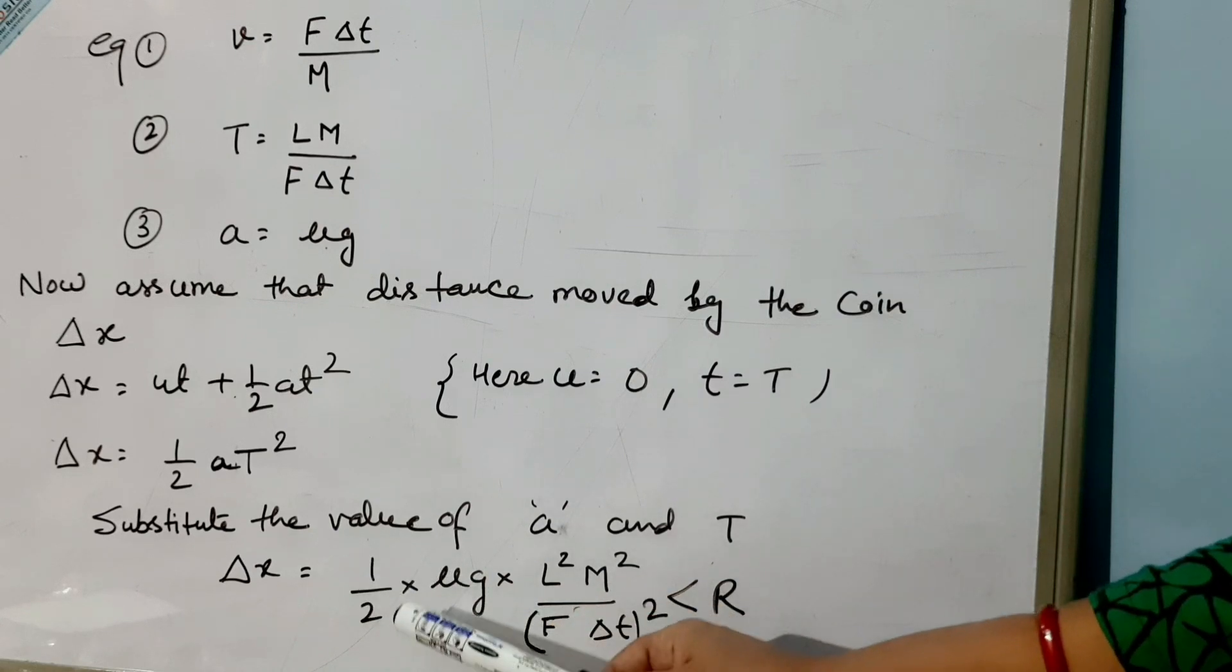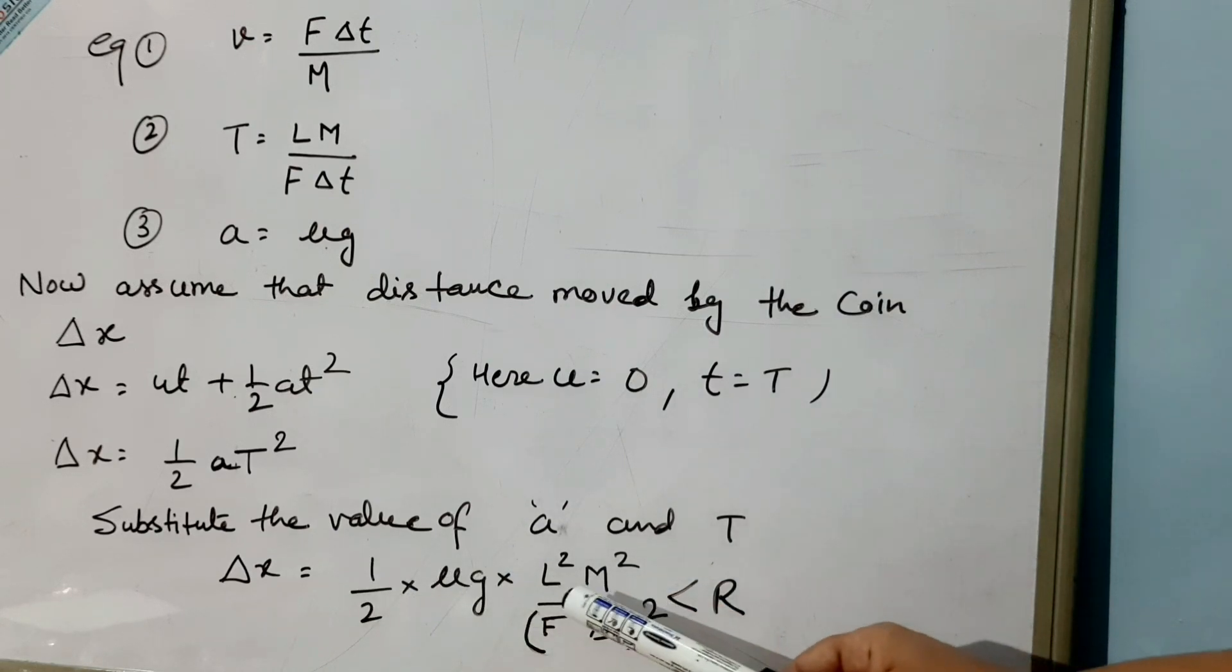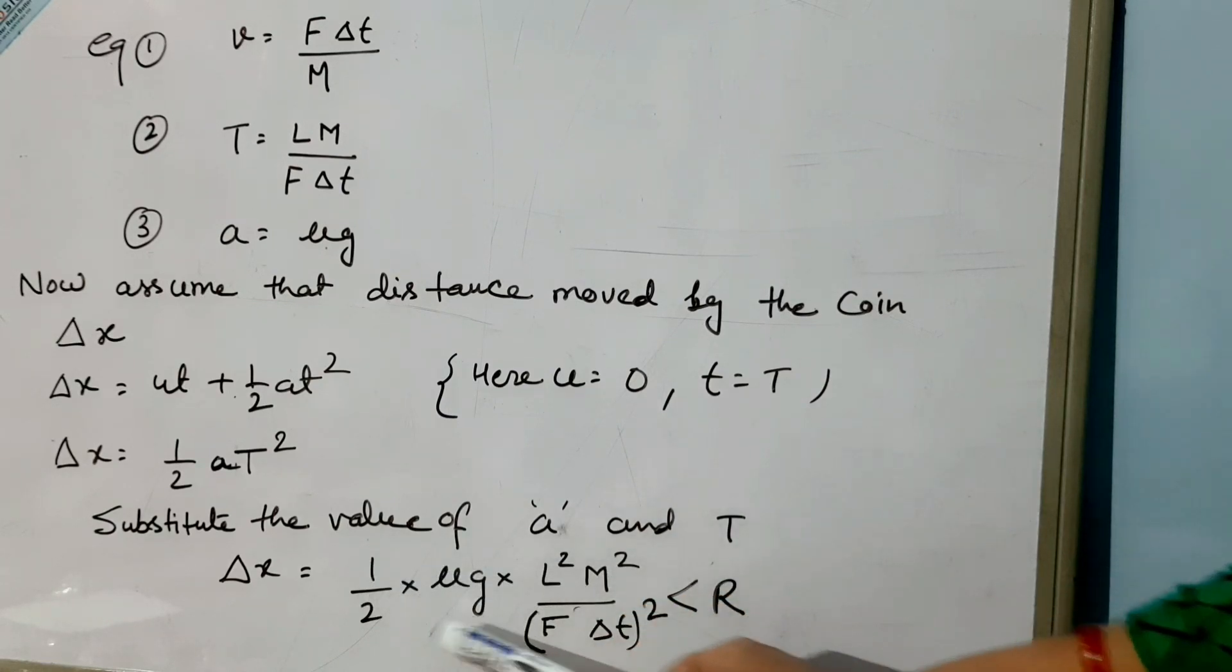This whole value should be lesser than R. This R is the radius of the tumbler. Then only the coin will fall into the tumbler.